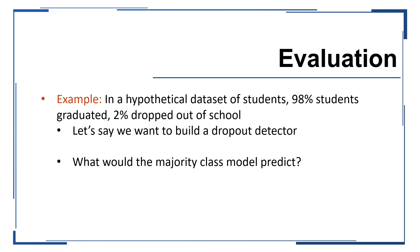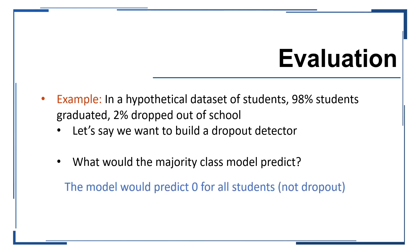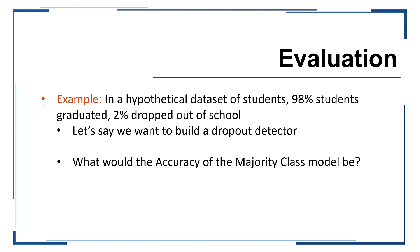If we look at another example, where we want to predict student dropout — where 98% of students graduated and just 2% dropped out of school — what would be the majority class model's predictions? Go ahead and take a guess and pause the video to make sure you understand. The model would be predicting 0 for all students. And what would the accuracy of this model be? In this case, we would have 98% accuracy. By just predicting 0 for all samples, we have 98% accuracy.